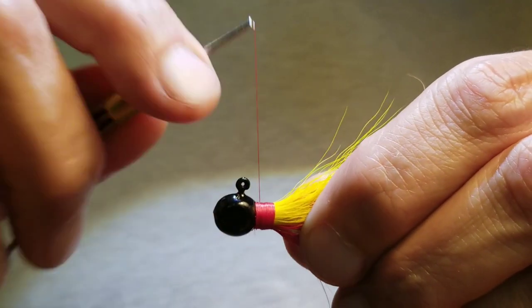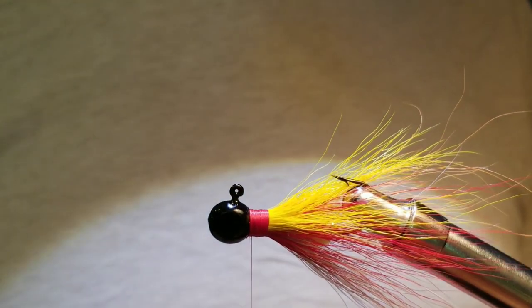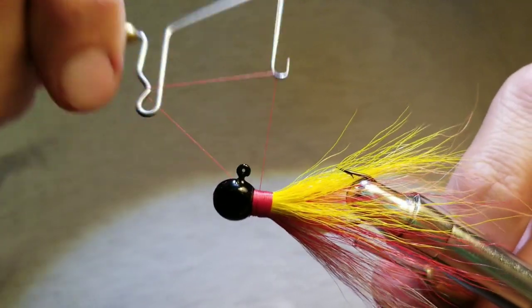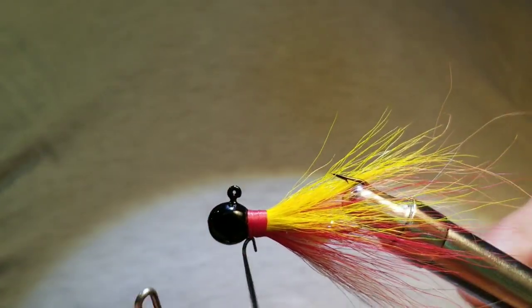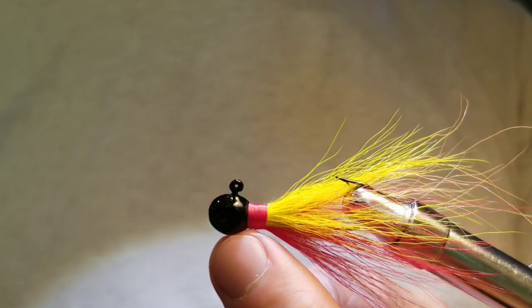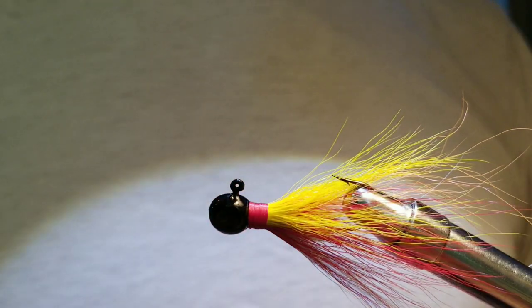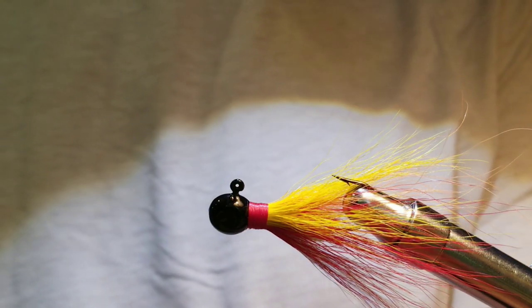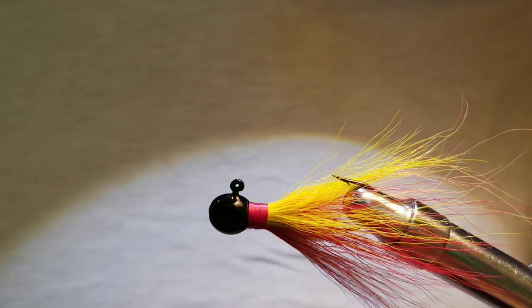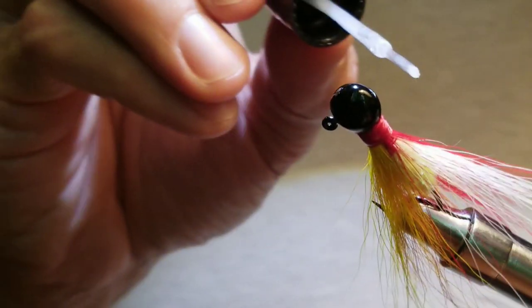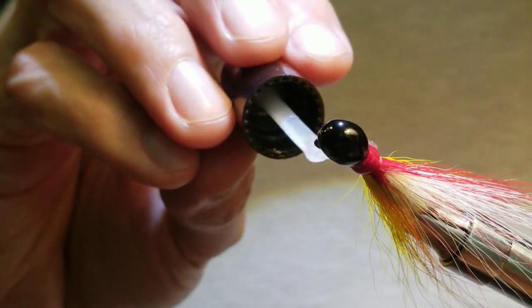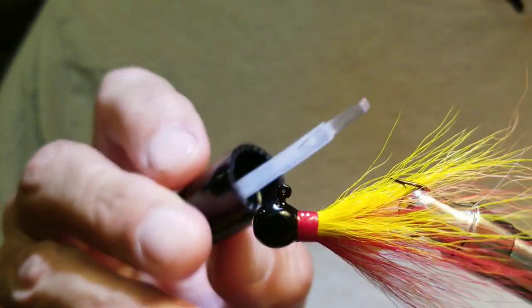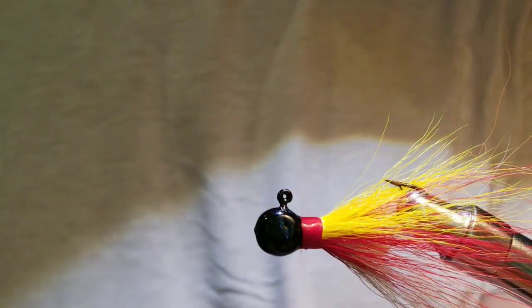It looks good, and then we're going to whip finish. And finally, I'm going to put a nice coat of Sally Hansen's Hard as Nails, just put that directly on there, nice and secure. And that is the finished Jim's Special Jig.